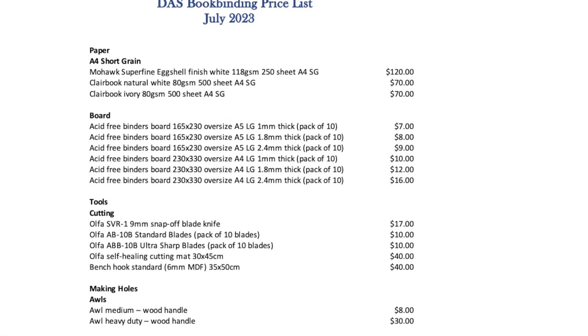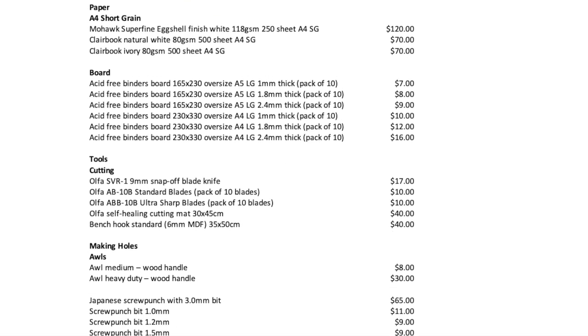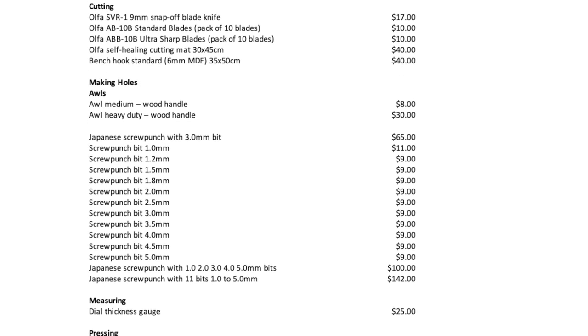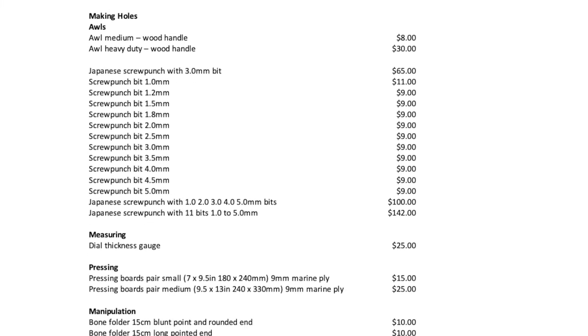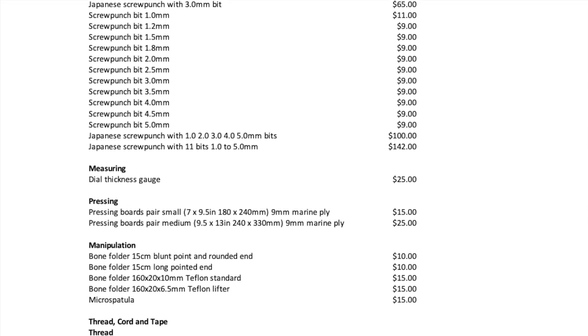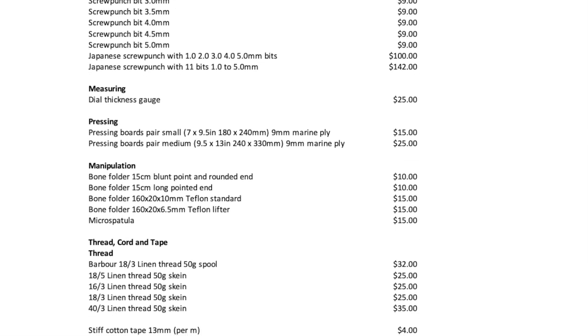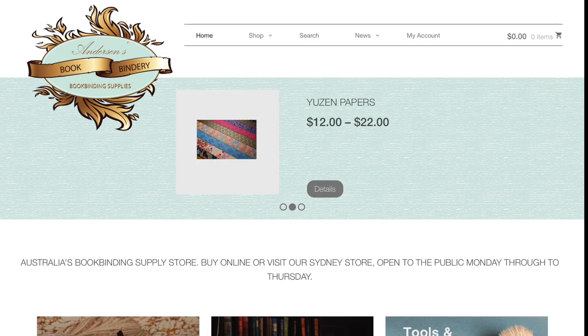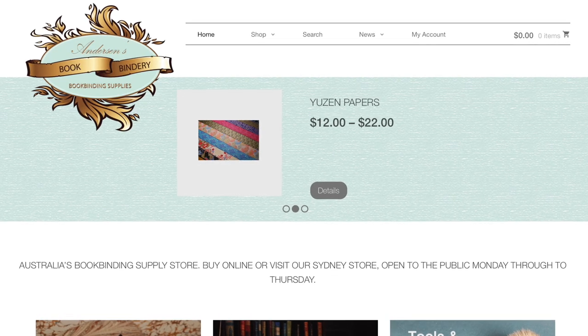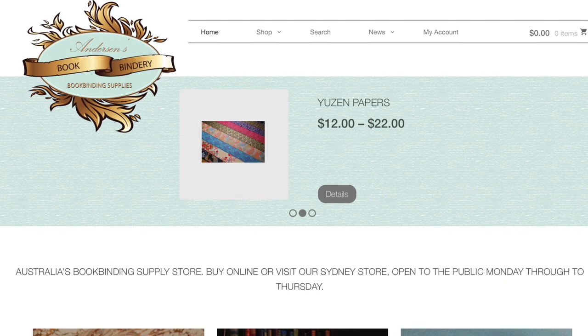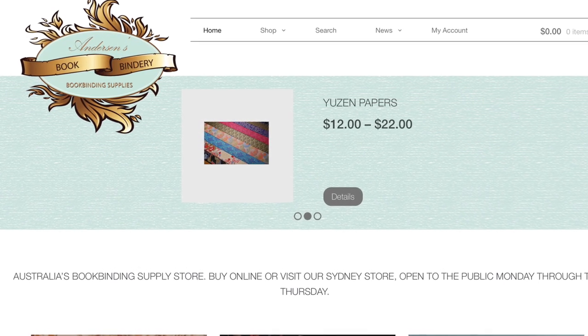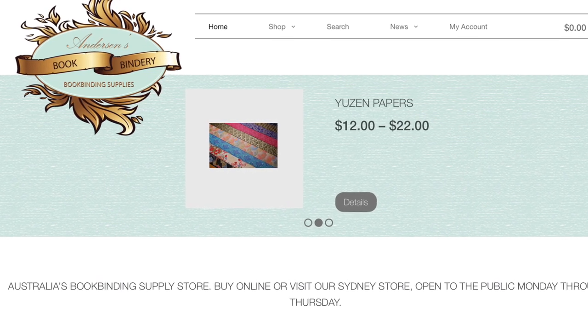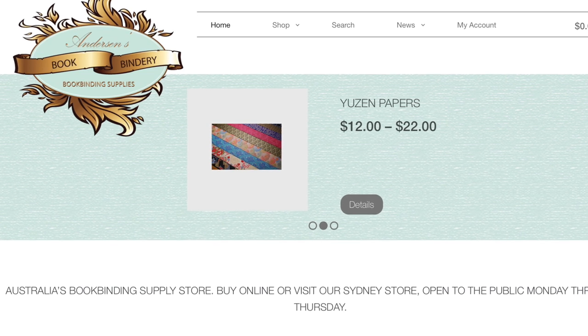I have started selling again, but my online store is not yet up. I do have a price list, and there's a link in the description. There are a couple of small sellers that use eBay and Etsy, but I think they're expensive and don't have much range, and I can't really recommend them. The best supplier of bookbinding supplies is Carly Anderson of Anderson's Bindery in Redfern, Sydney. If there's something unusual that you're after, and it isn't listed in my price list or Carly's website, contact me or Carly, and we'll help you find it.